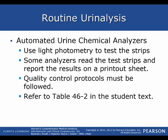When using an automated urine chemical analyzer, you use light photometry to test the strips. Some analyzers read the test strips and report results on a printout sheet. Quality control protocols must be followed, and you can refer to Table 46-2 in the student text.